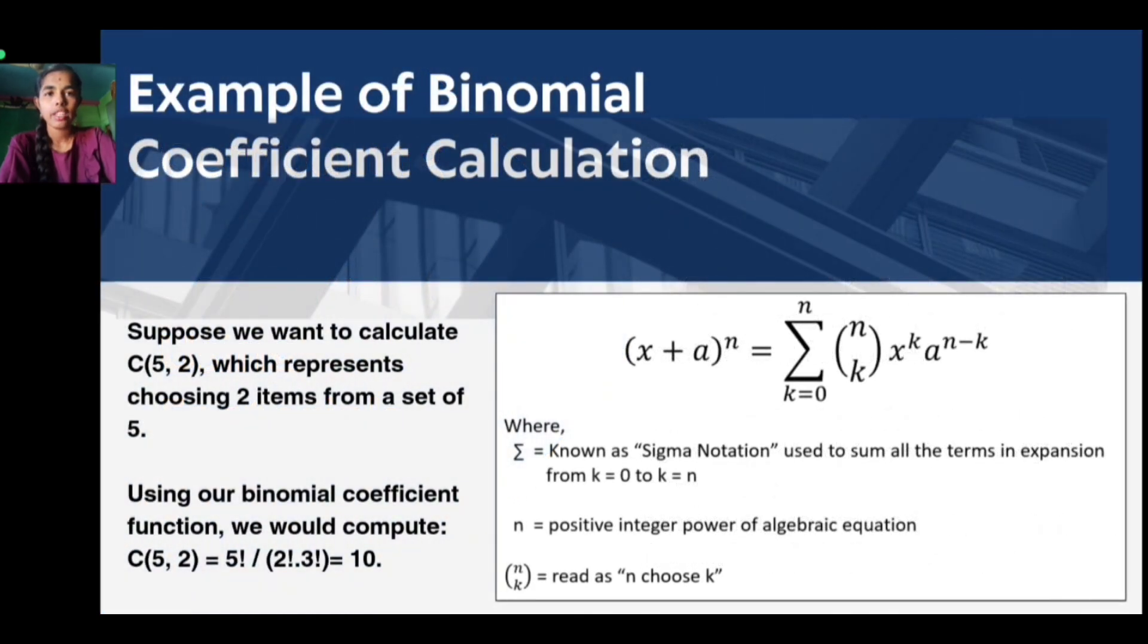Example of binomial coefficient calculation: Suppose we want to calculate C(5,2), which represents choosing two items from a set of five. Using our binomial coefficient function, we compute C(5,2) = 5! / (2! × 3!) = 10.